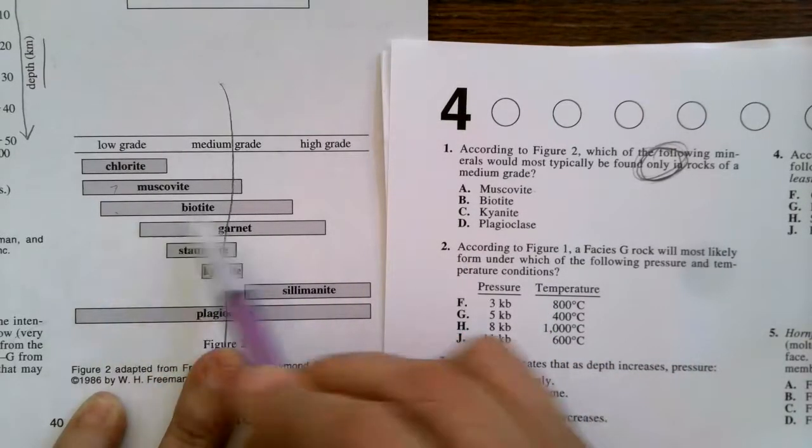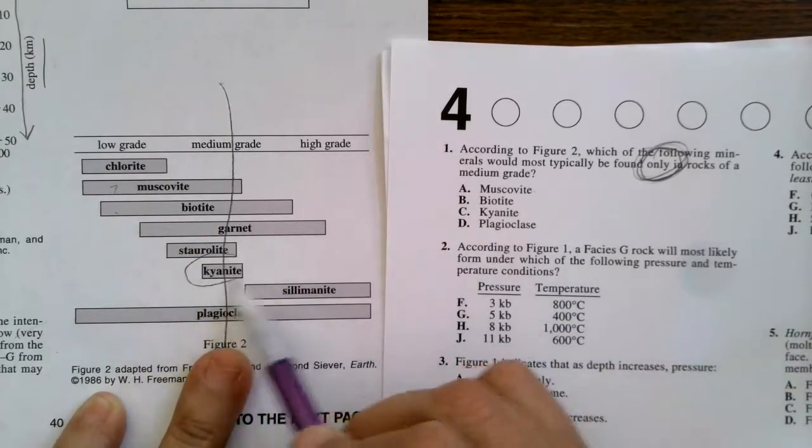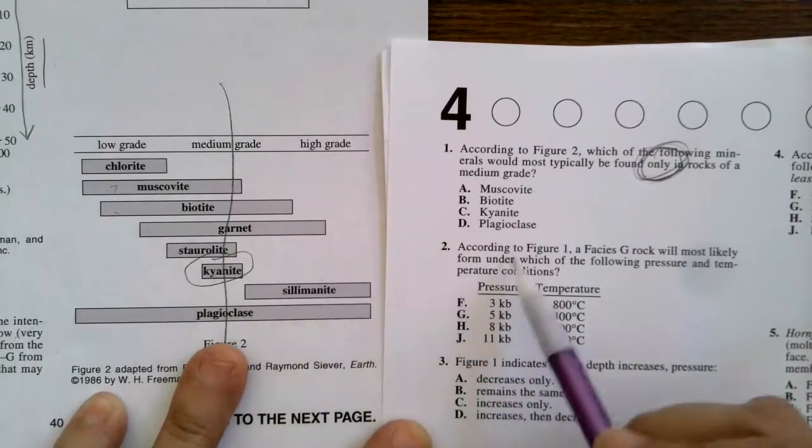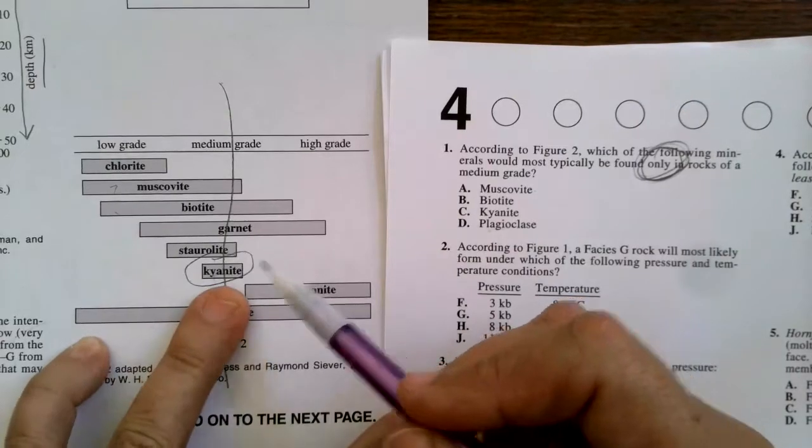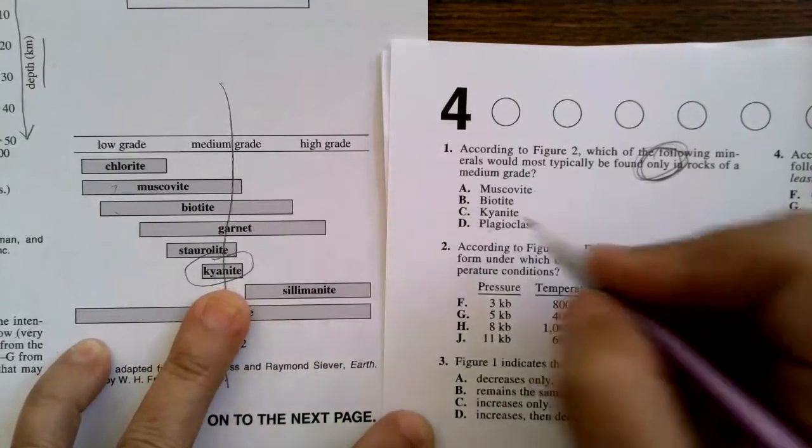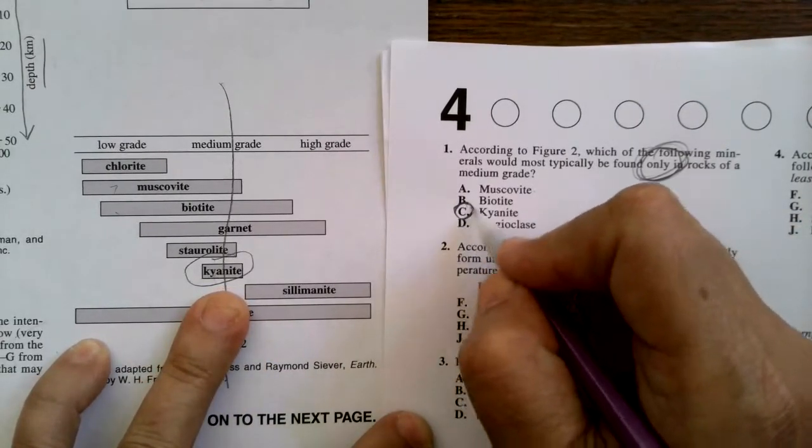Muscovite, nope, that's also in low grade. Biotite, that's also in low grade. Kyanite, oh yeah, that's right, oh it's all in the middle, but let's check the other one. Plagioclase, that's in everything. So the only one that's only in the medium grade is kyanite.